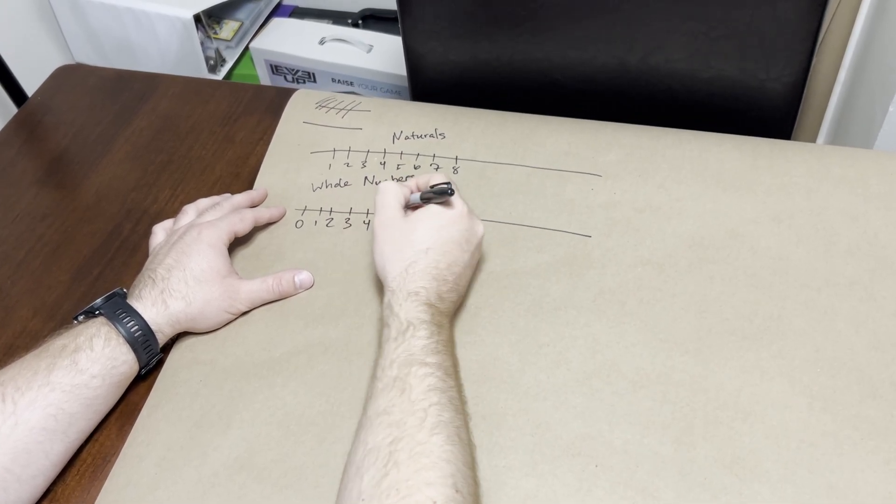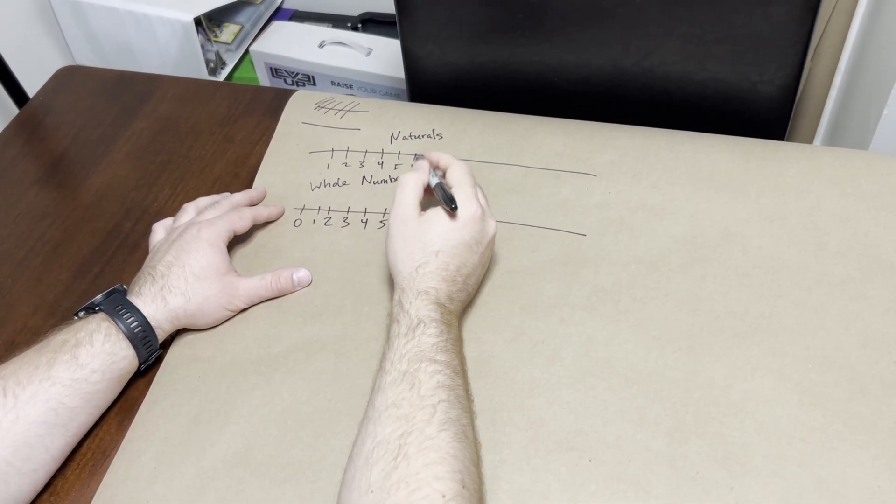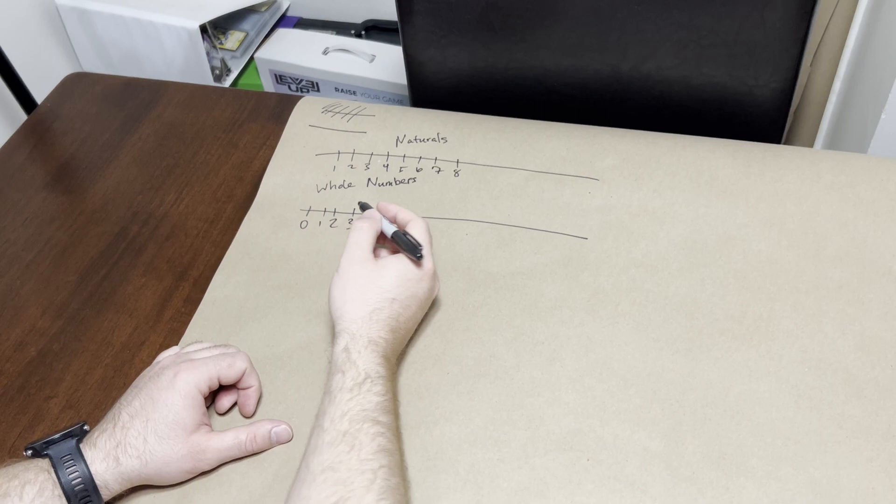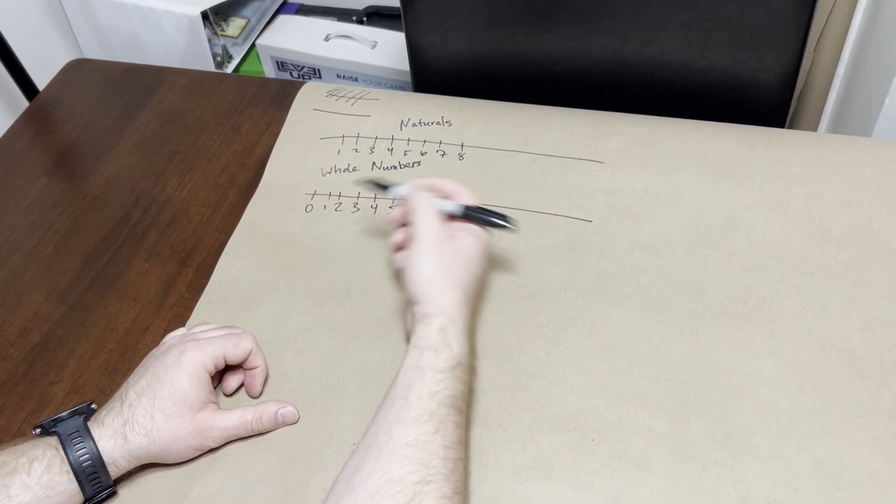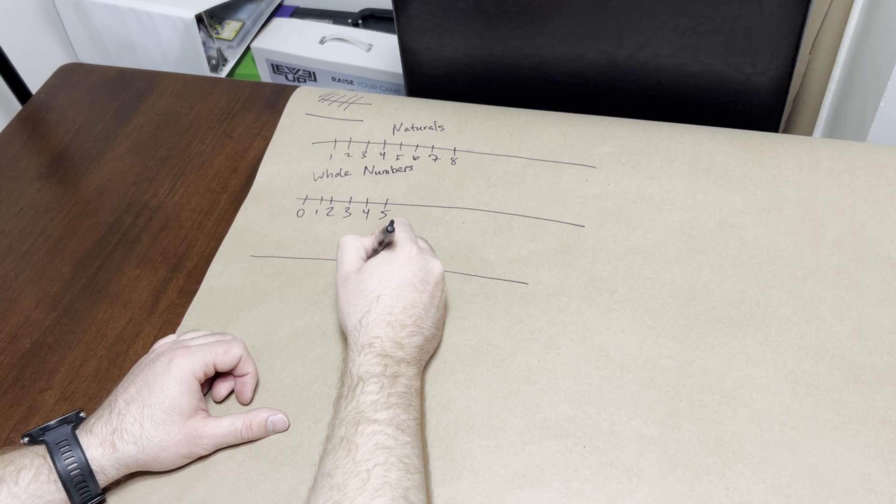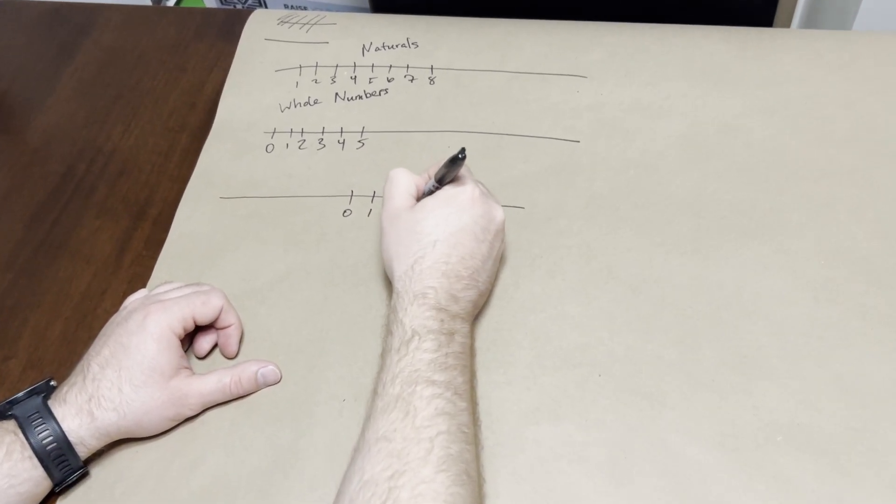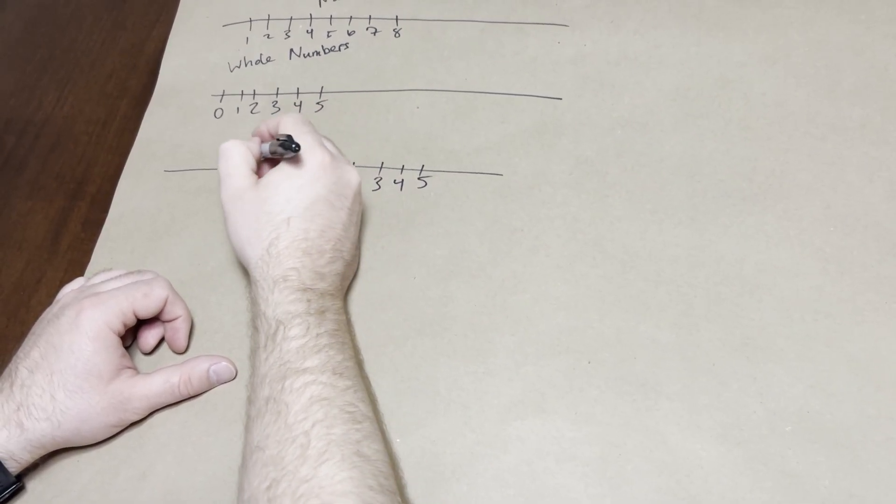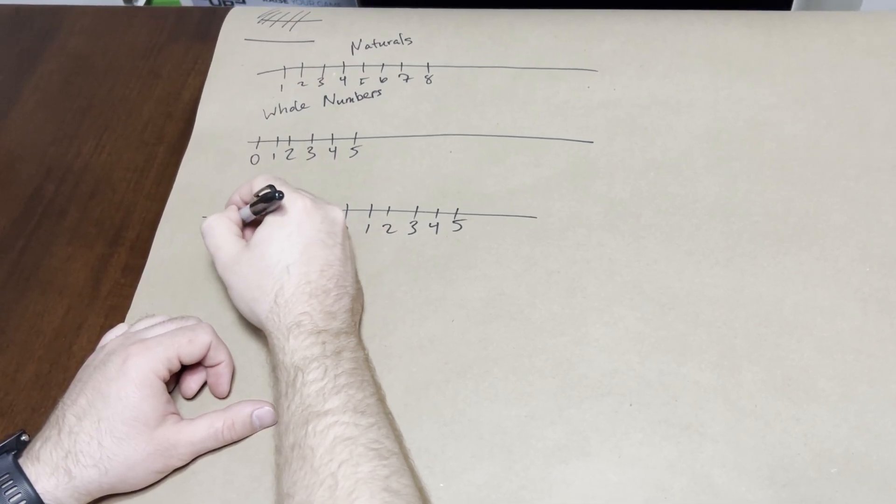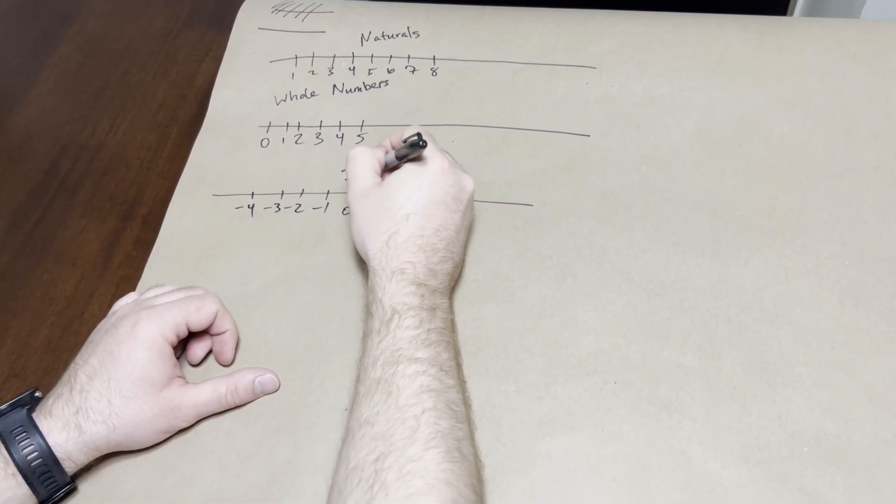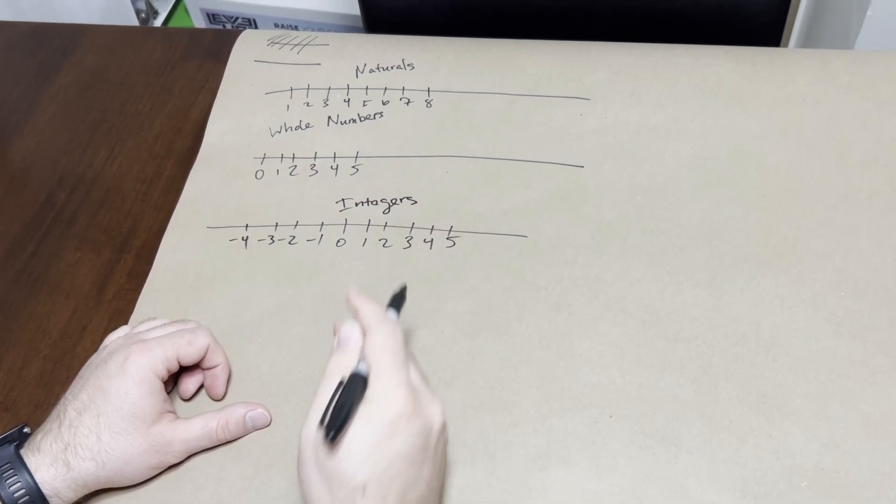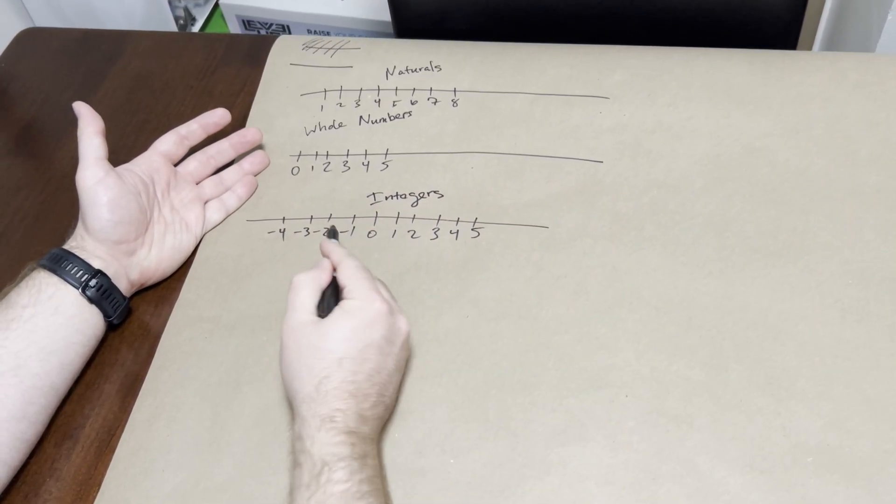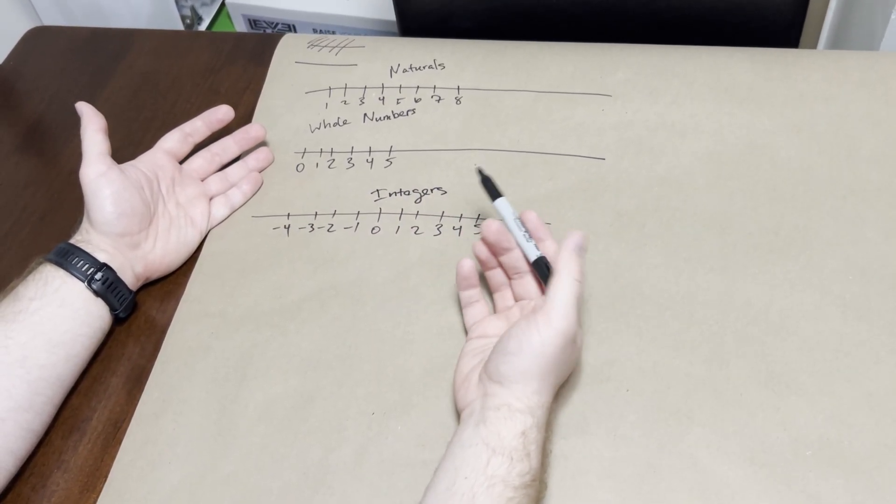We moved on. Zero is a really important aspect for a lot of reasons. After this, we wanted to start calculating debt, so we started extending the number line the other direction. We start here. We have one, two, three, four, and so on. And then we had negative one, negative two, negative three. These are the integers.